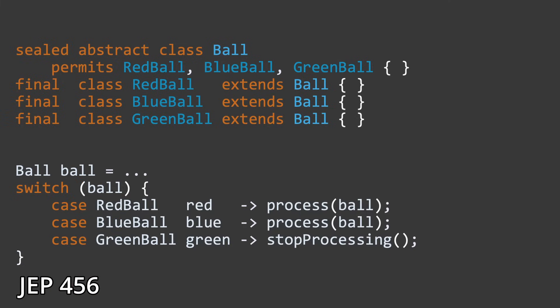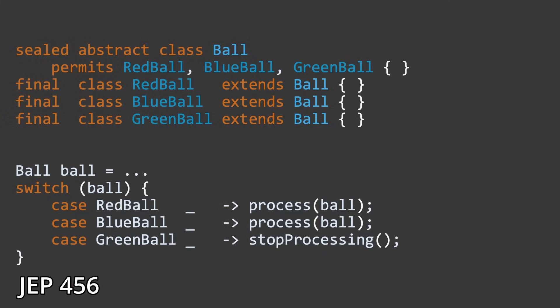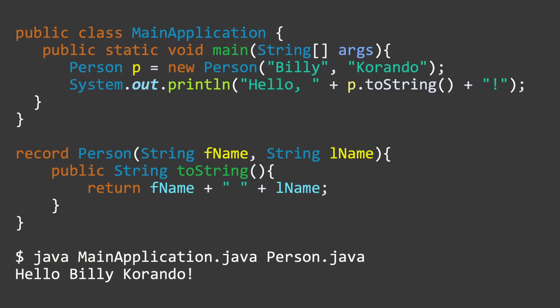JEP 456 adds unnamed variables and patterns. This JEP allows variables and pattern variables you do not intend to use to be replaced with an underscore. This not only reduces code verbosity but also improves the intent of code as well. Finally, JEP 458 — launch multi-file source code programs — allows the Java launcher to compile and launch multiple source code files, an improvement over JEP 330 launch single file source code programs.